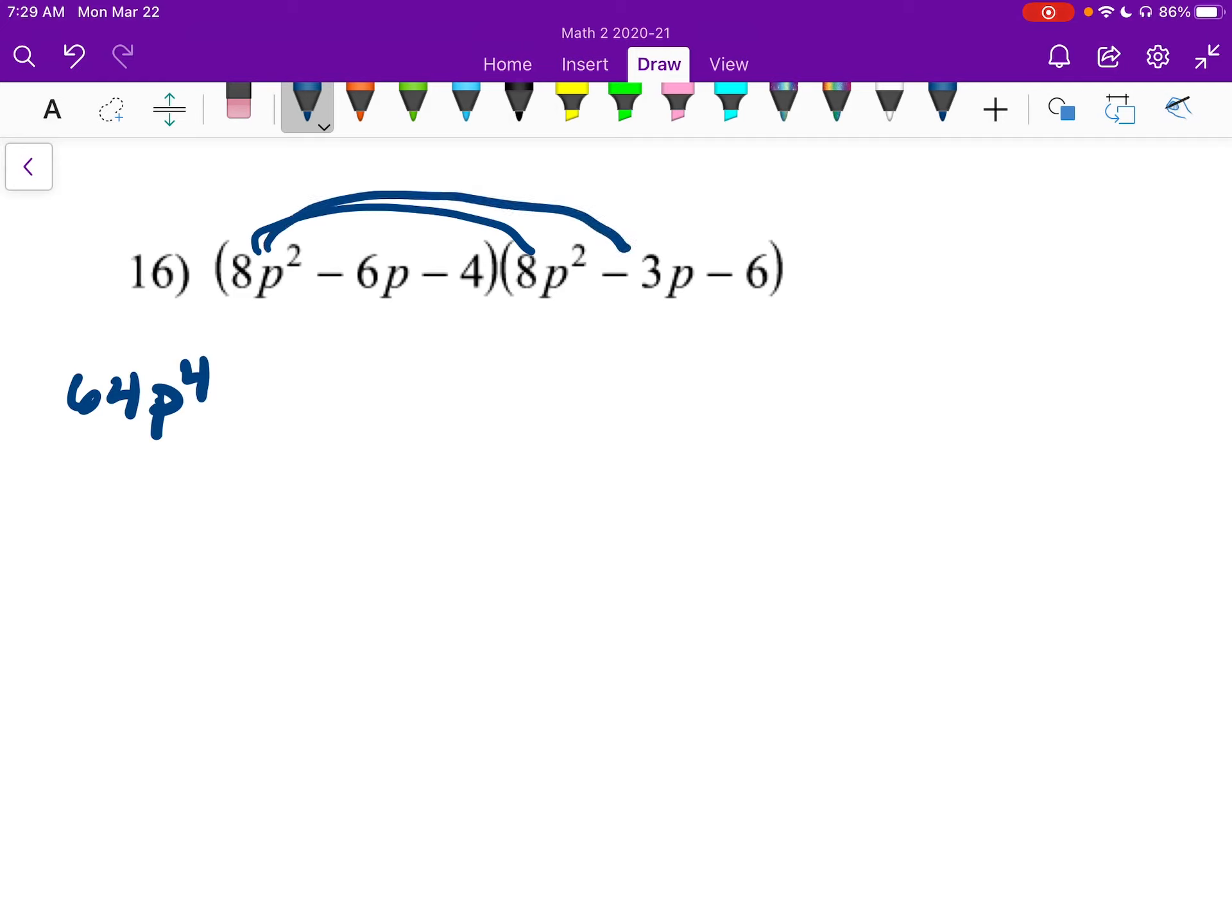8 times 6, good grief. They have all the hard multiplication in this one. 8 times 6 is 48. This will be a negative 48p squared.